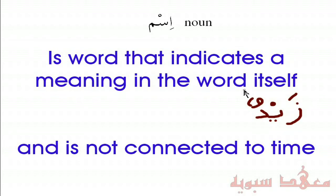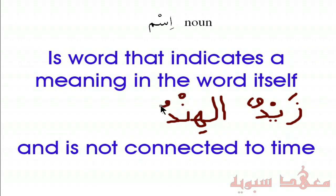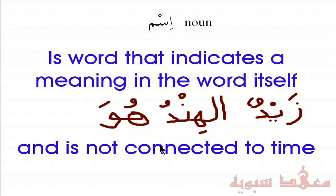Another example of a noun is Al-Hind, which means the country India. When we say Al-Hind, or India, we mean the country. Once again, its meaning is inside the word. Another example is the pronoun 'hua', which means either 'he' or 'it' depending on the context. That also is a word that indicates a meaning inside the word.